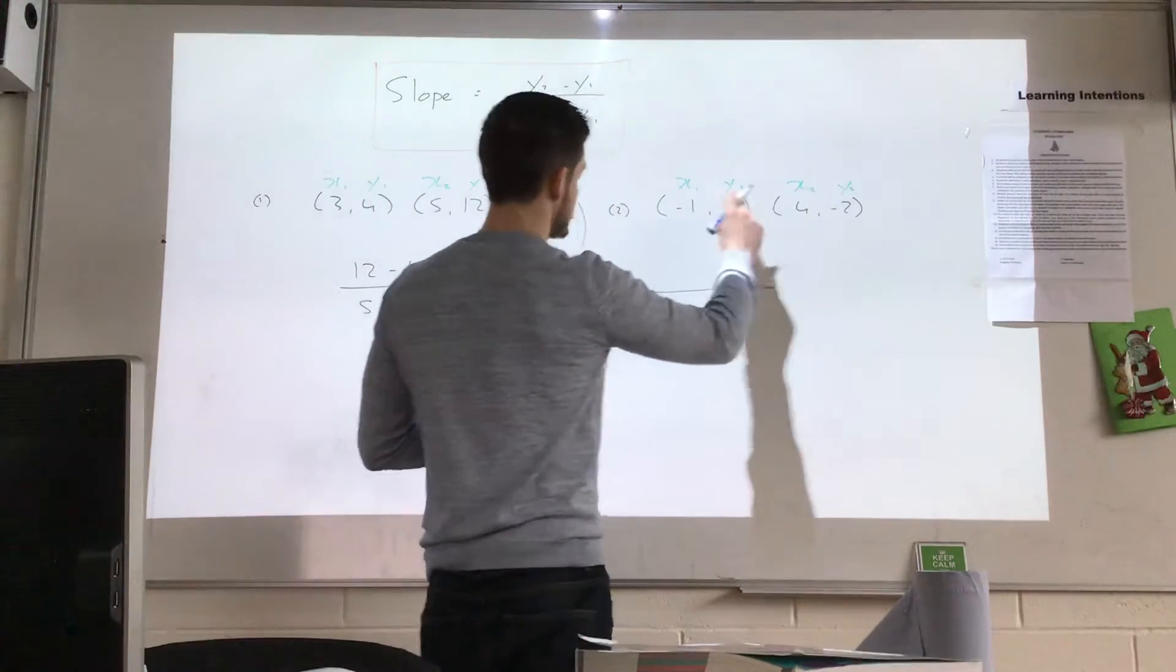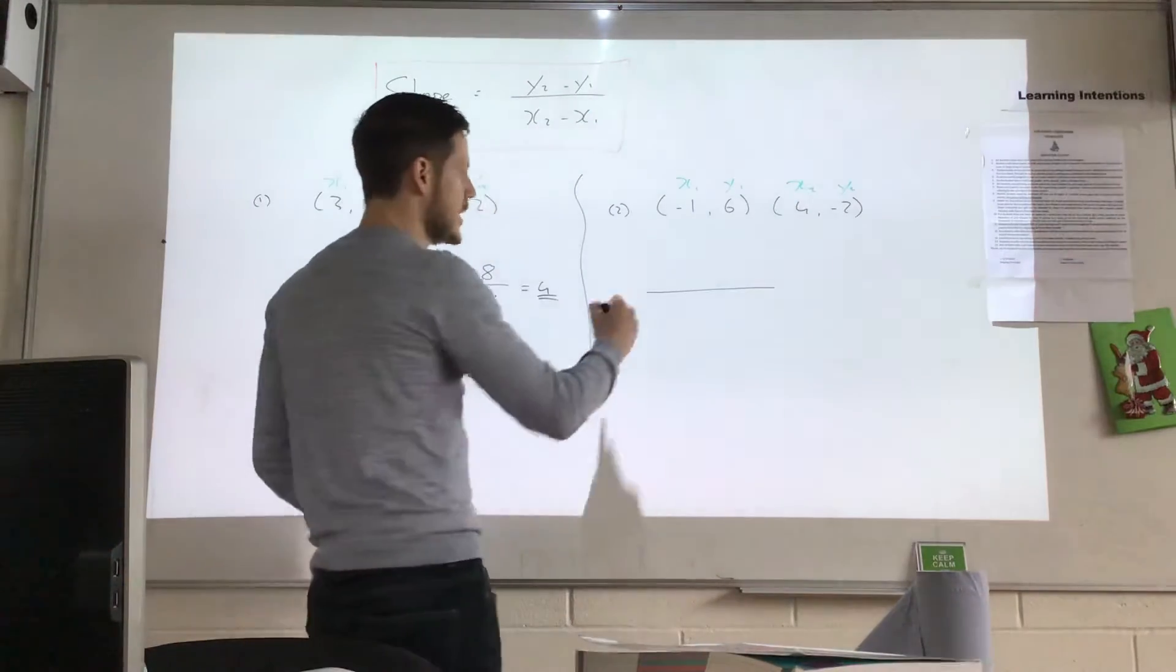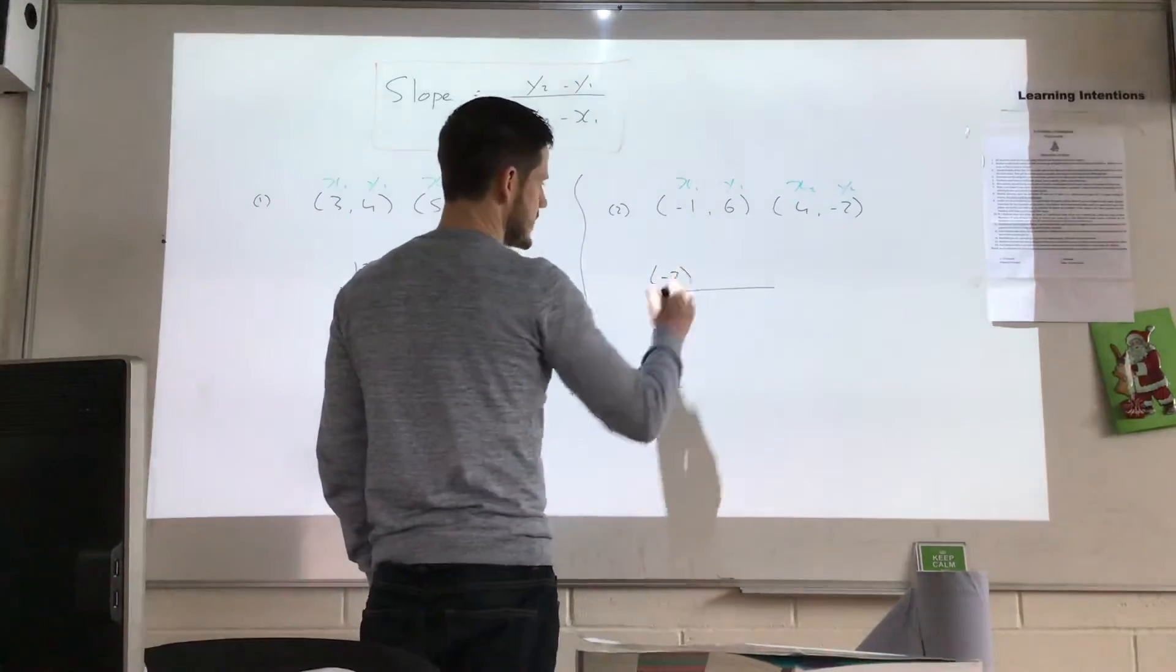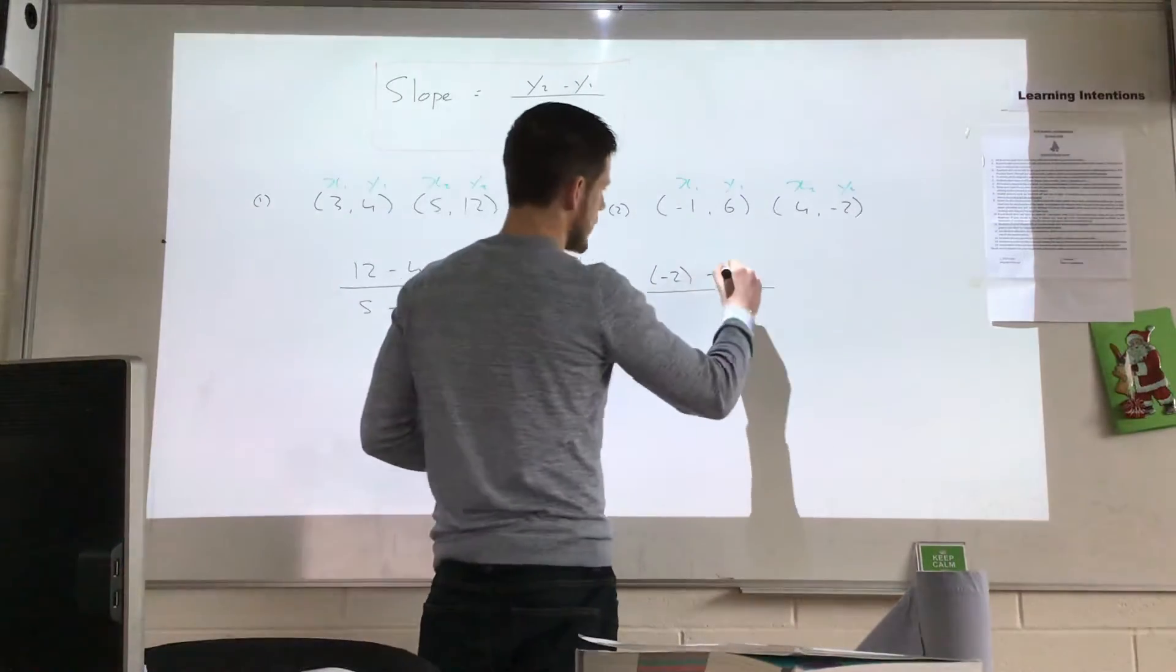And I'm going to write down y2 minus y1. Now see why this is a minus number here? This makes it a bit more difficult. So I put that in brackets. I do minus 2. Any minus number in your calculator, you just put it in brackets. Minus 6. So I do minus 2 in brackets, minus 6.